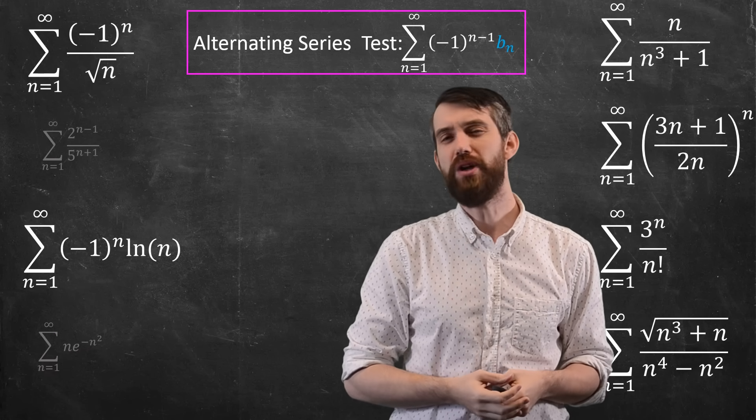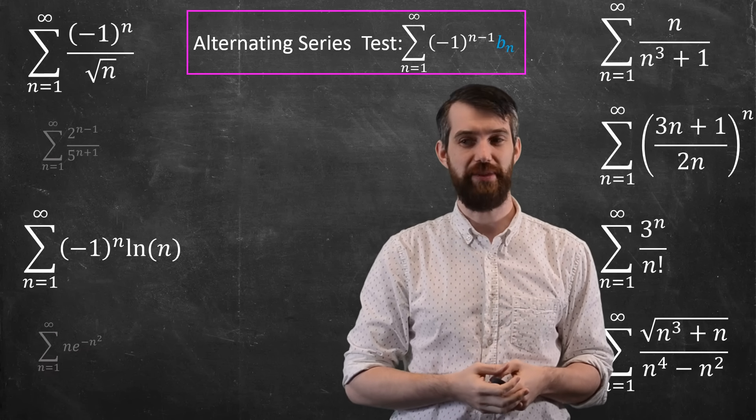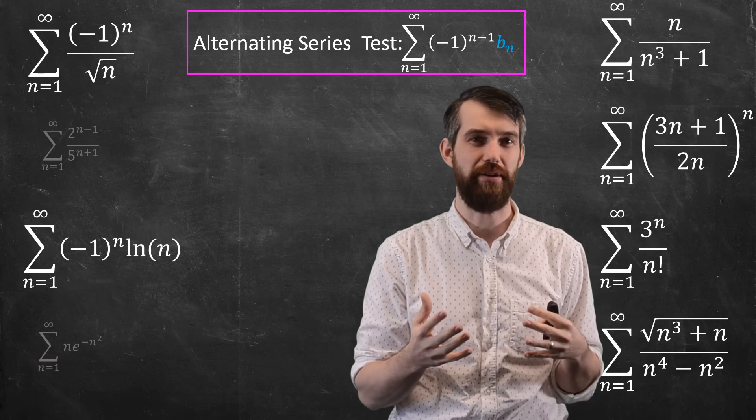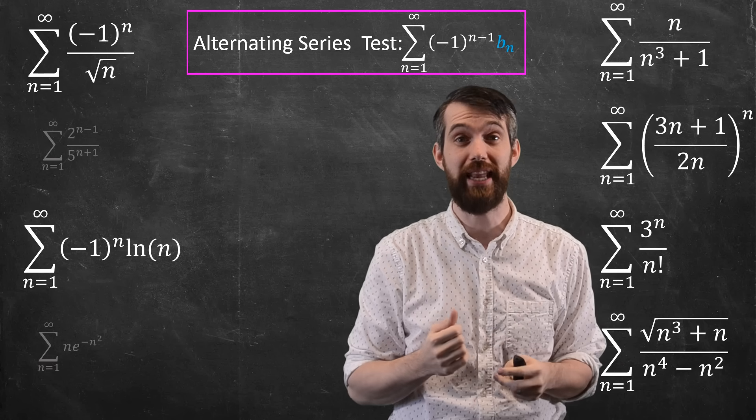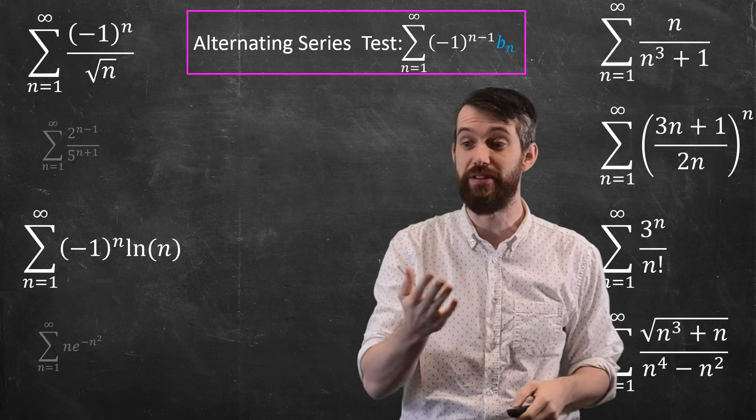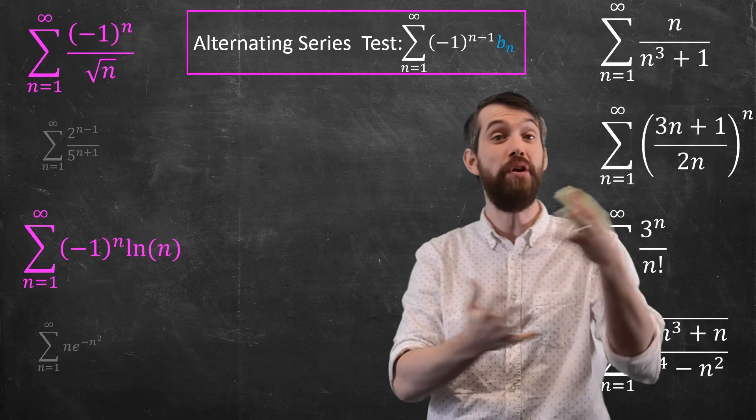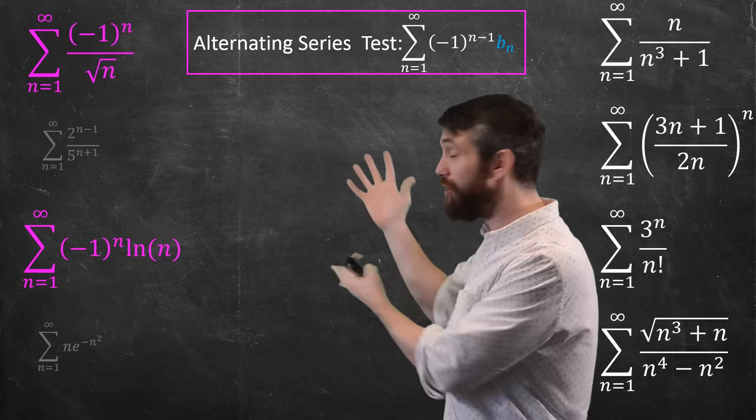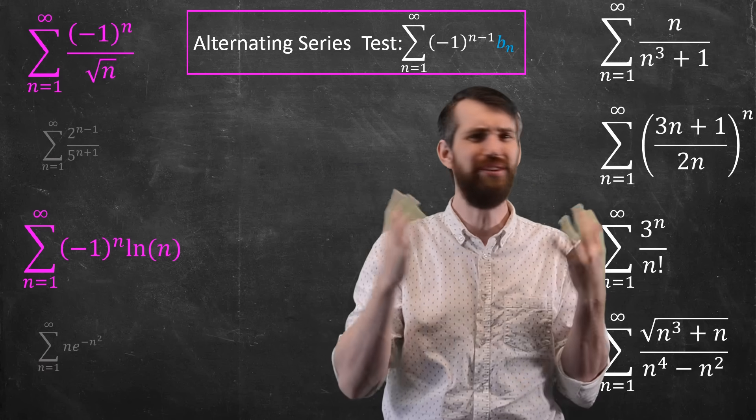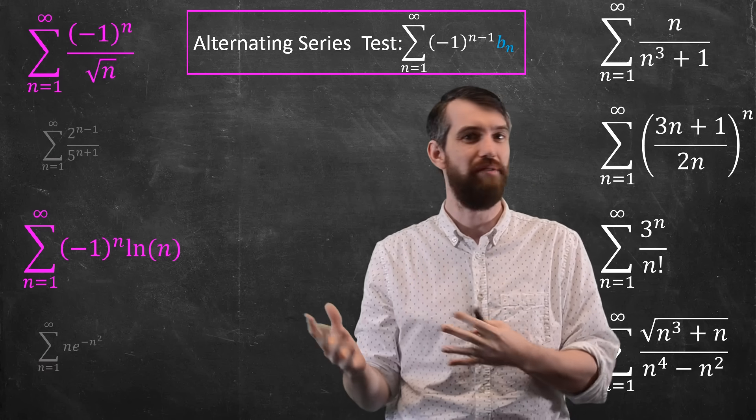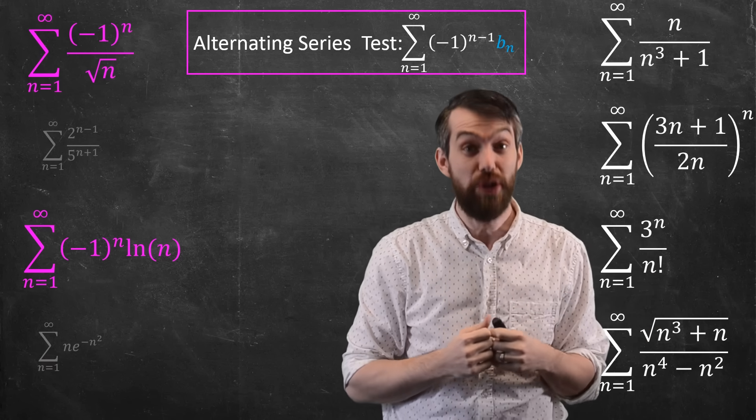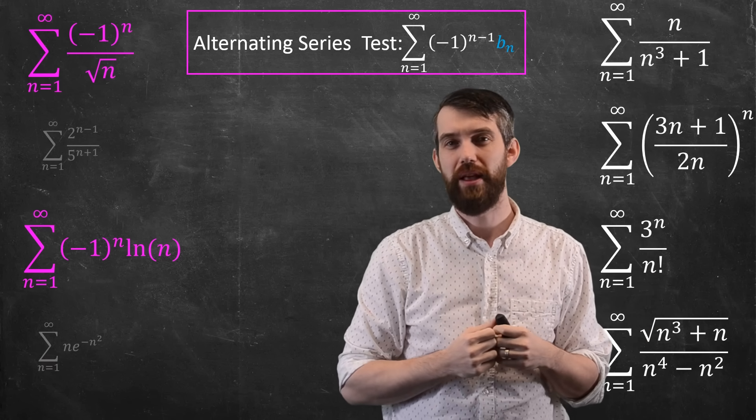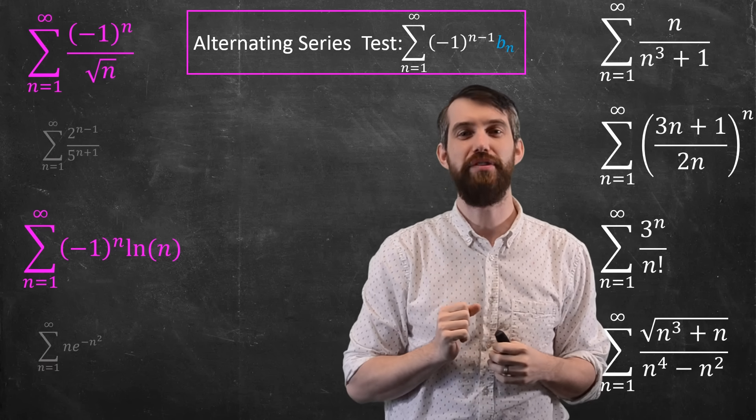Now, carrying on, the next one I want to talk about is alternating series test. And the thing to note here is that there's actually two different series that I've put up on this list that have this (-1)^n, so it may be one or both or neither of these. So there's two series that are candidates for alternating series test. Alternating series test is perhaps the clearest. If you don't have a (-1)^n or (-1)^(n-1), then don't use the alternating series test.